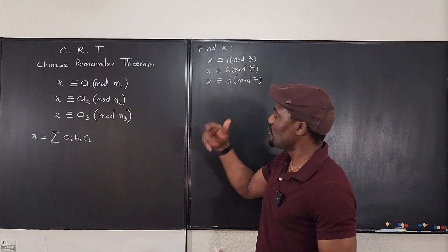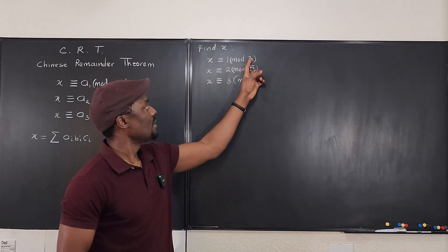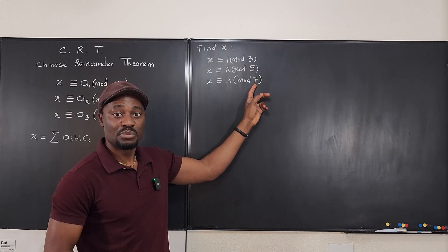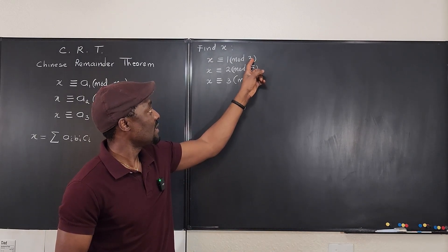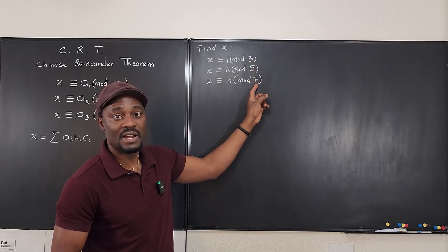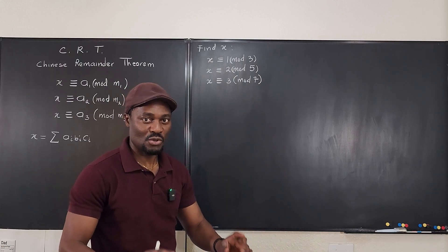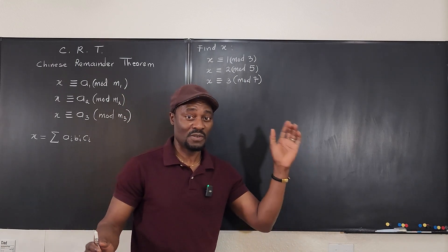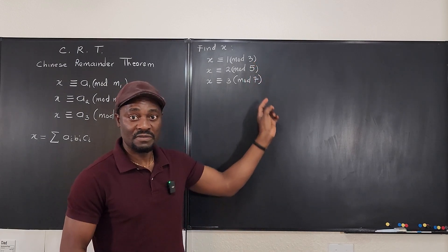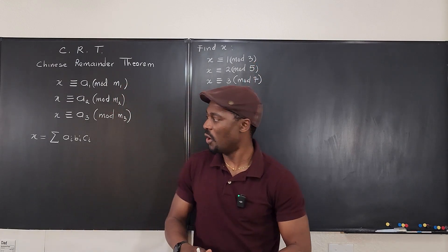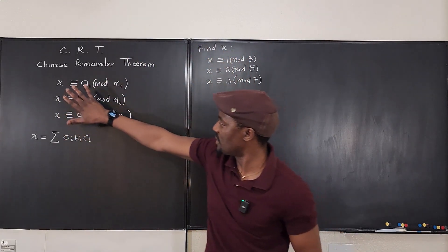Now, the numbers I have chosen — three, five, and seven — are all relatively prime, meaning no number shares a common factor. There's no number that divides three, five, and seven simultaneously. This is a precondition for the Chinese Remainder Theorem to work: the moduli cannot share common factors. So remember that before applying the theorem.